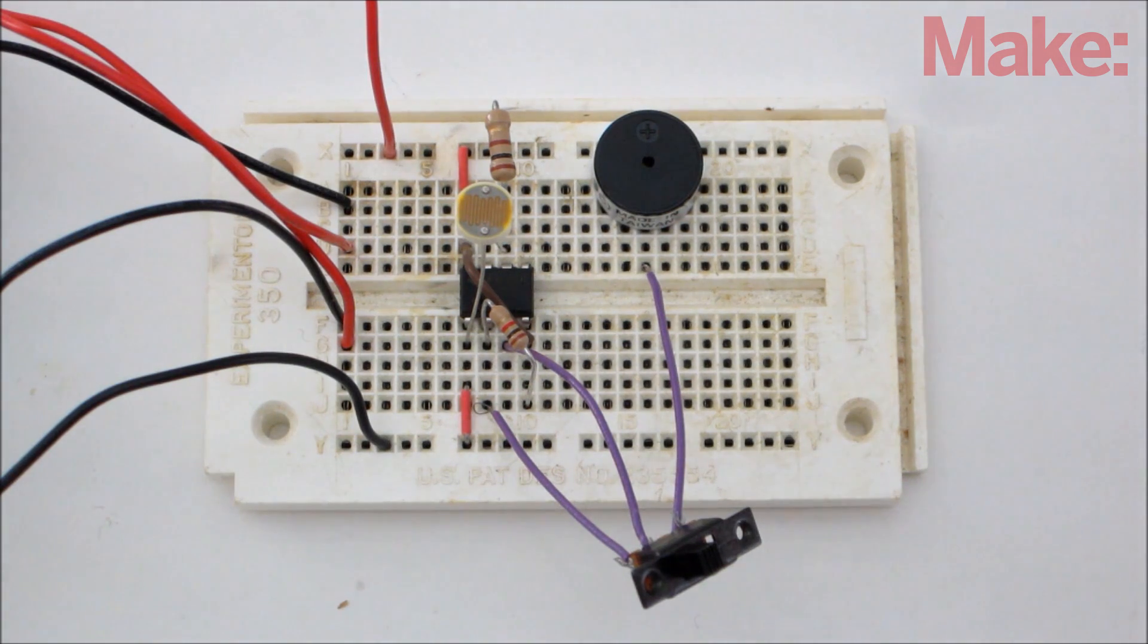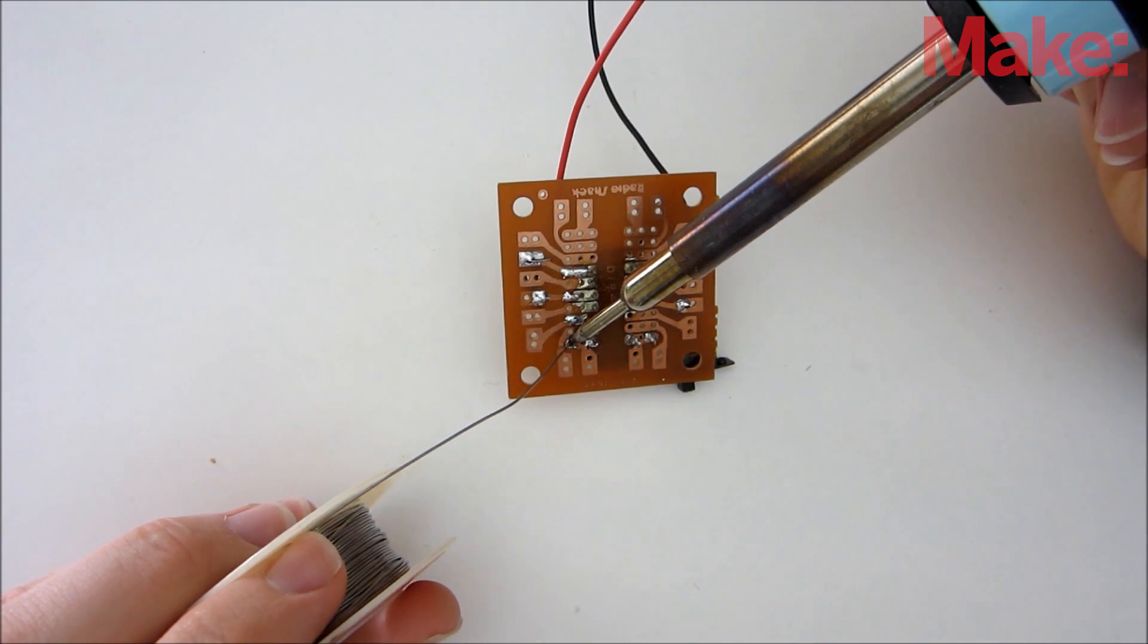First assemble the circuit on a breadboard to test it. If everything is working properly, solder it all together on a printed circuit board.